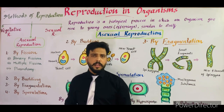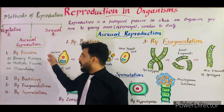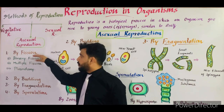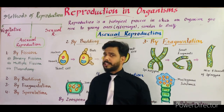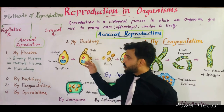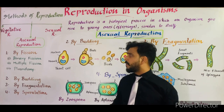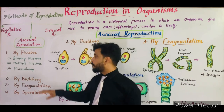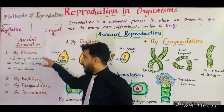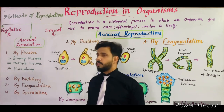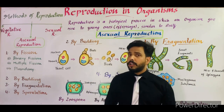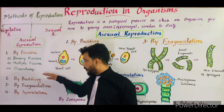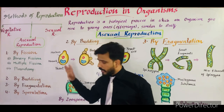Number one is fission, and fission can be categorized into three types: the first is binary fission, the second is multiple fission, and the third is plasmatomy. I described all these terms in my last video. So let's start — in this video I will tell you about budding, fragmentation, and sporulation.